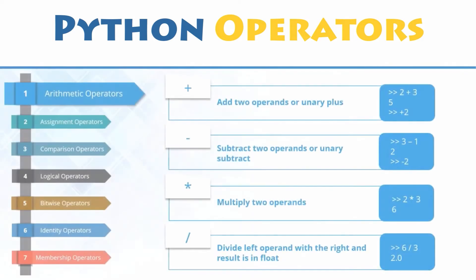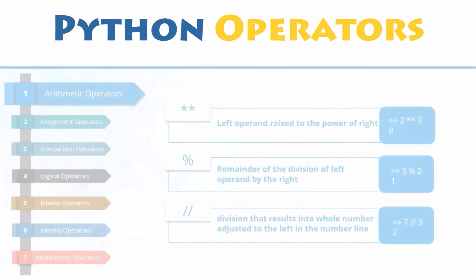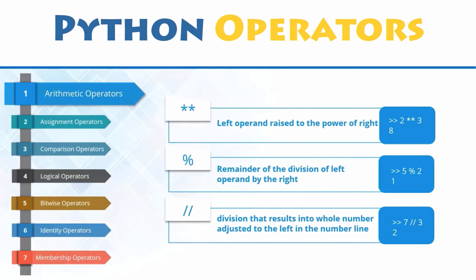Arithmetic operators are used to perform common mathematical operations in Python, like addition, subtraction, and multiplication, but also division, among so many others. Below are the arithmetic operators with symbols and their meaning. These are simple mathematical operators that you will use while doing an arithmetic operation in Python. Apart from these four basic arithmetic operators, you also have exponential, modulus, and floor division operators.